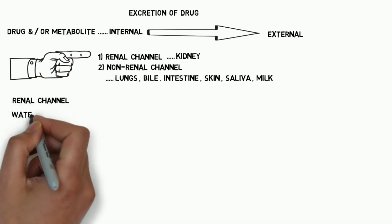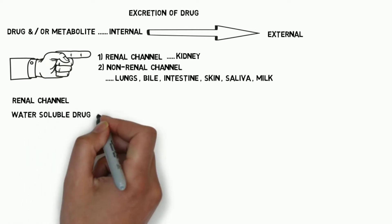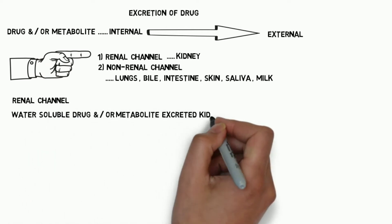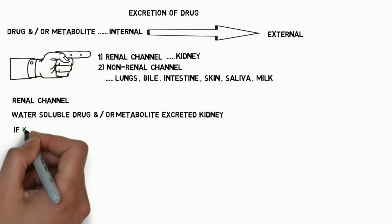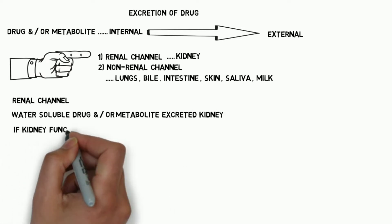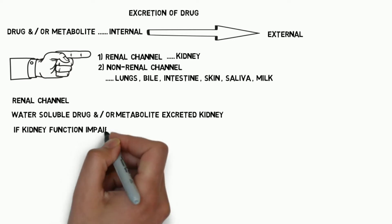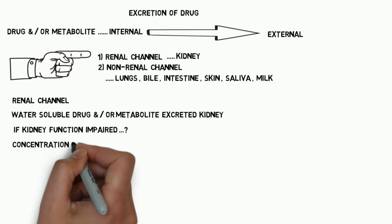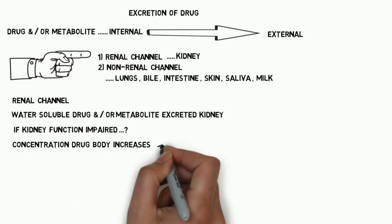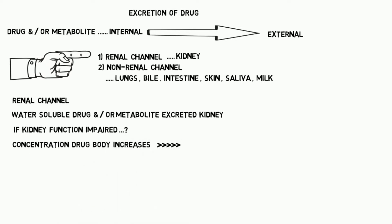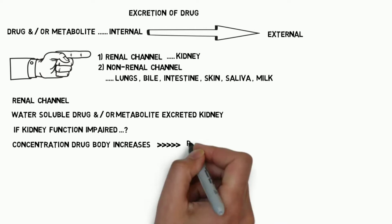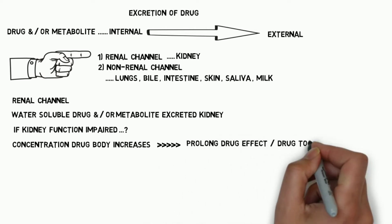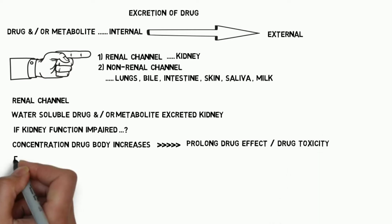Let's see the renal channel of drug excretion. Water-soluble drugs and/or their metabolites are excreted through the renal channel. If kidney function is impaired, the concentration of a drug in the body will increase, which leads to either prolongation of drug effect or drug toxicity.